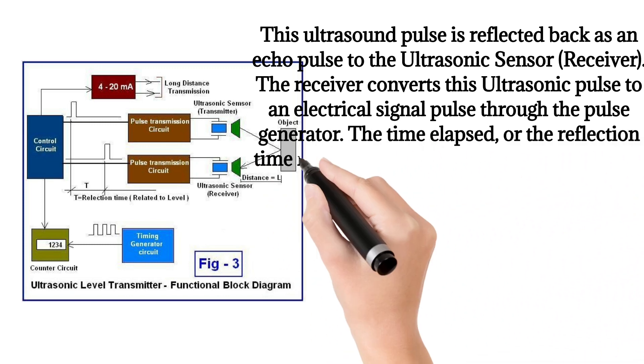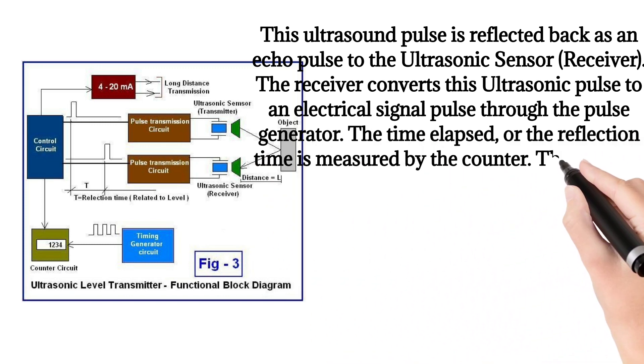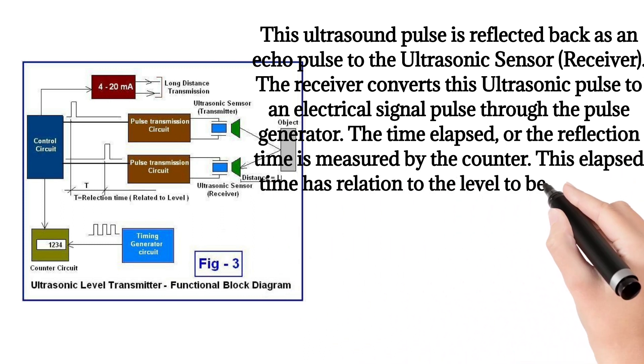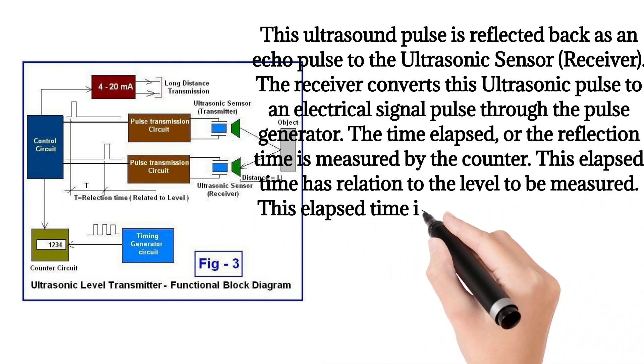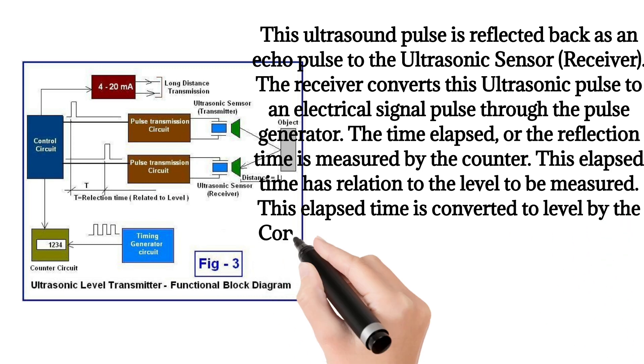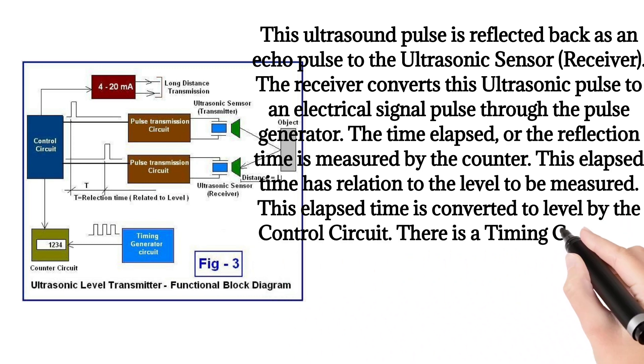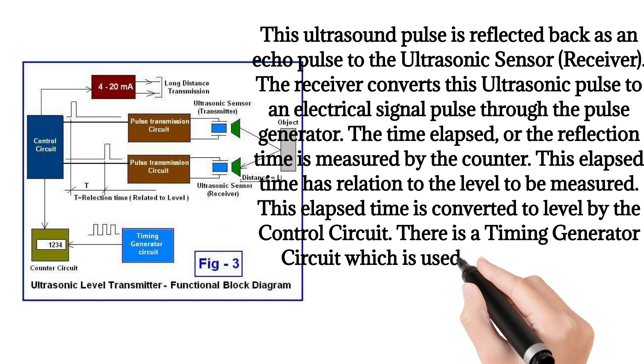This elapsed time has relation to the level to be measured. This elapsed time is converted to level by the control circuit. There is a timing generator circuit which is used to synchronize all functions in the ultrasonic level measurement system.